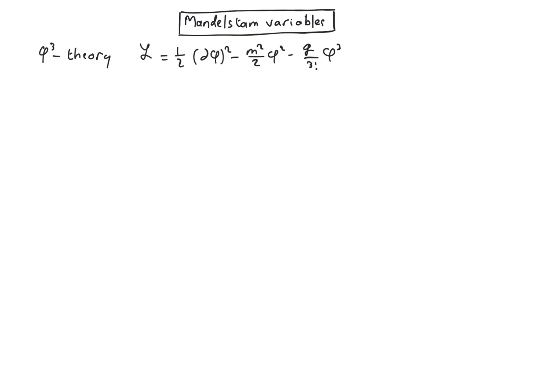This theory is not more complicated than the phi-4 theory. One issue is that with an odd power of the field, the potential energy is not bounded from below and we are not guaranteed to have the ground state. It is, however, a well-justified effective theory.